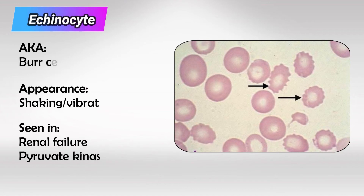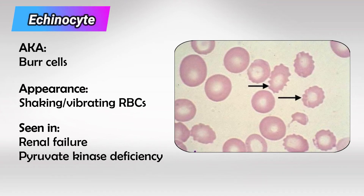Next we have echinocytes, which are commonly referred to as burr cells, and they look as if their outer membrane is spiked, with many different small spines. We see this in renal failure and pyruvate kinase deficiency.